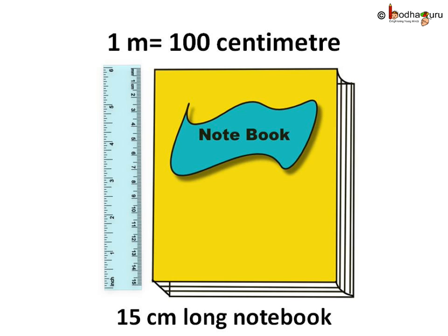So, how long is a centimeter? 1 meter is divided into 100 equal parts, so 1 meter is equal to 100 centimeter. The short form of centimeter is cm, so we write 5 centimeters as 5 cm.